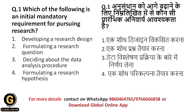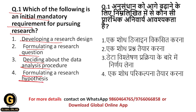So students, let us start with today's session — question 1. Which of the following is an initial mandatory requirement for pursuing research? The options are: developing a research design, formulating a research question, deciding about the data analysis procedure, and formulating a research hypothesis.